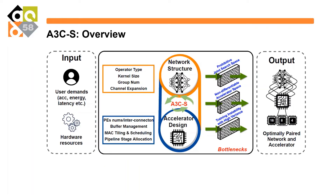Here is the overview of A3CS. The whole framework takes user input of the accuracy and performance metrics to optimize for, such as energy and latency. It also takes hardware constraints in terms of the maximum amount of buffers and keys. The whole framework is composed of two parts: the network structure search and also the accelerator design search.